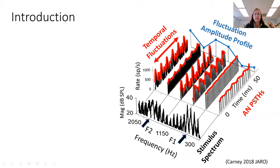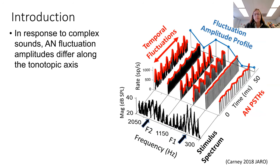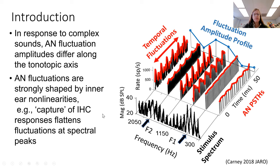This is an interesting feature of responses because they code many aspects of complex sounds. This illustration shows that spectral peaks, for example, because of saturation of the inner hair cells, result in flatter or lower fluctuations compared to channels tuned to frequencies between the spectral peaks. These differences in fluctuation amplitudes occur because of nonlinearities in the inner ear, in particular capture of the inner hair cell response, which flattens the fluctuations at spectral peaks.